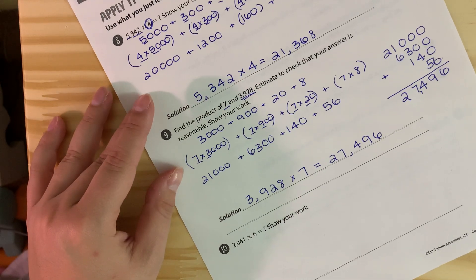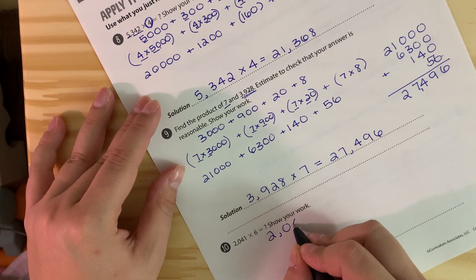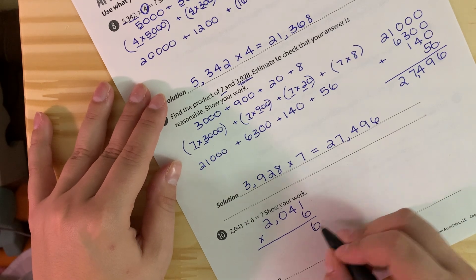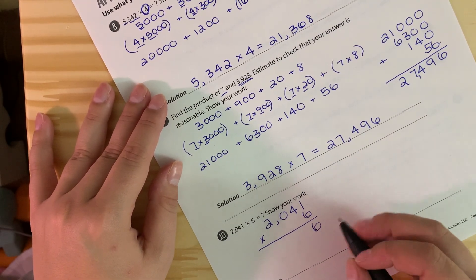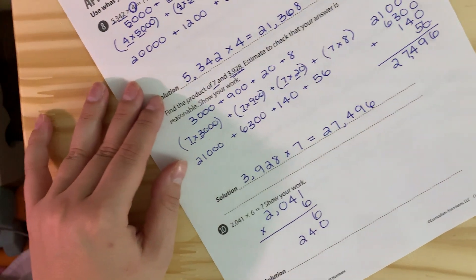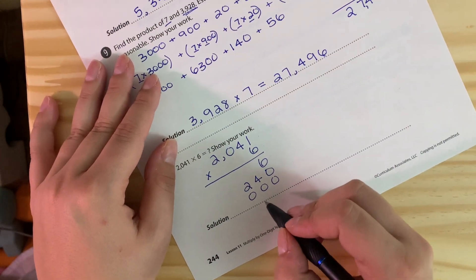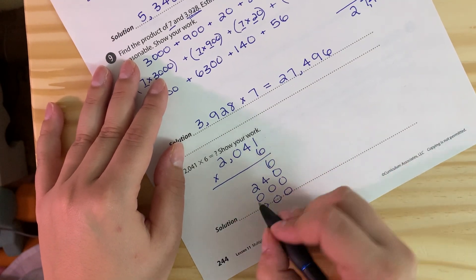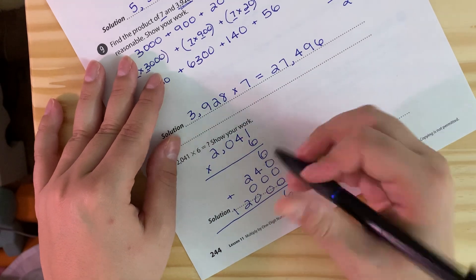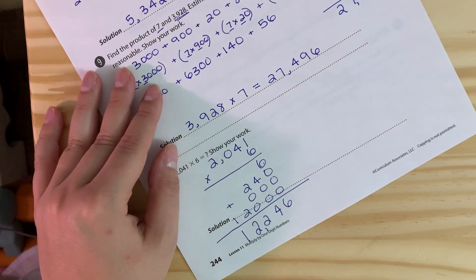And then moving on, instead of going this way, we're going to stack this one. So we're going to say 2,041 times 6 and we're going to go up and down. So we can say 6 times 1 is 6, 6 times 40 is 240, 6 times no hundreds, and then we have 6 times 2,000 which we know is 12, and then we need to add the three zeros to keep it in the thousands place. And then we're just going to add them up this way. So we have 6 plus nothing, 4 plus nothing, 2 plus nothing, 2 plus nothing, and then 1 plus nothing. So our answer is 12,246.